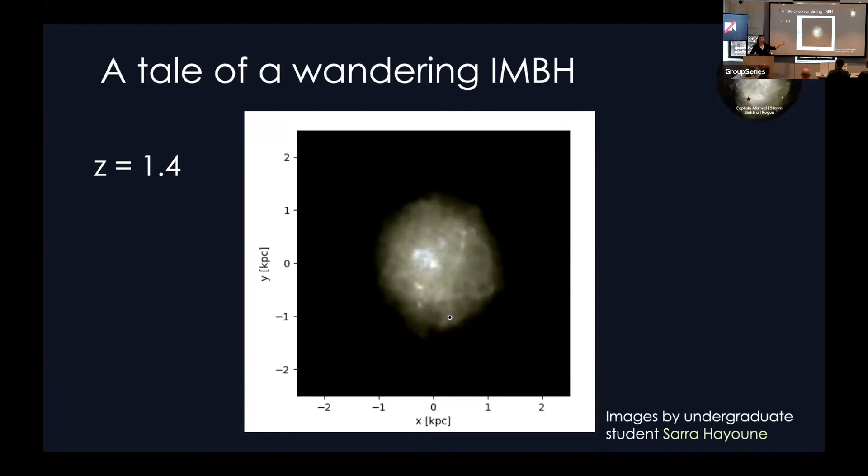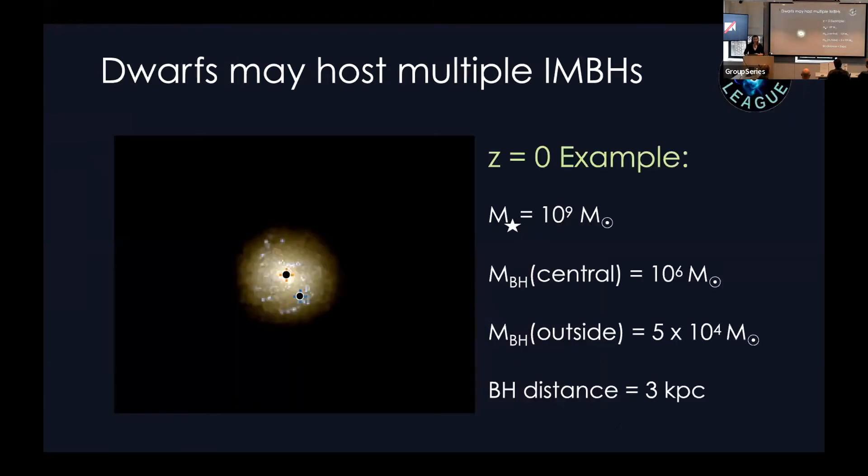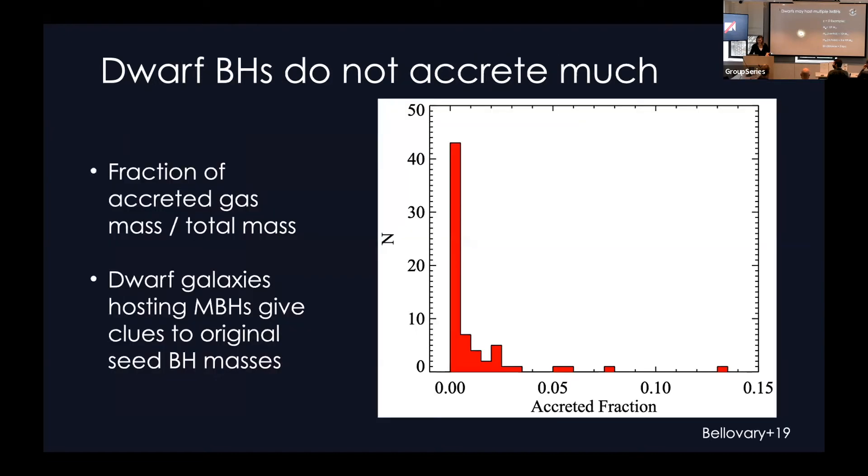So these situations are mostly due to mergers between tiny galaxies that host massive black holes, and larger galaxies, which sometimes do and sometimes don't. Here's an example of a dwarf that hosts multiple black holes. So it has a stellar mass of 10 to the 9, and it's got a central black hole of a million solar masses, and the outer black hole of 50,000 or so, which is the seed mass in the simulation, and it's about 3 kiloparsecs from the center. So we can have more than one.